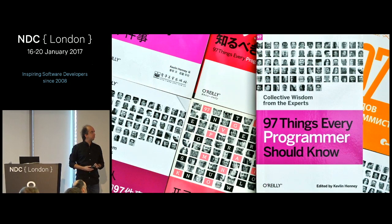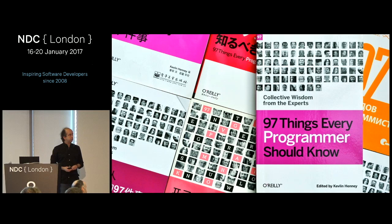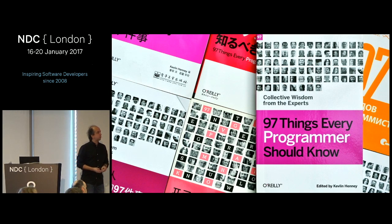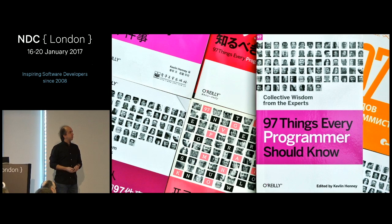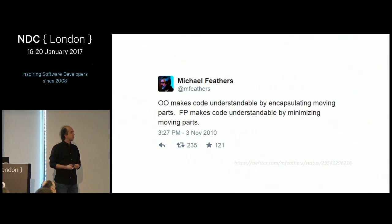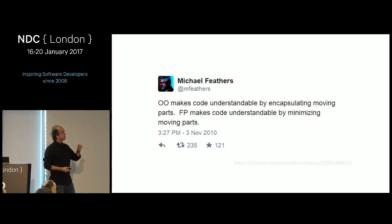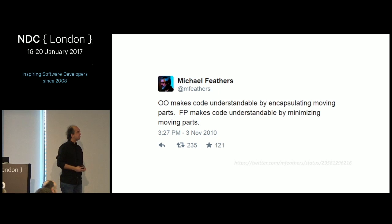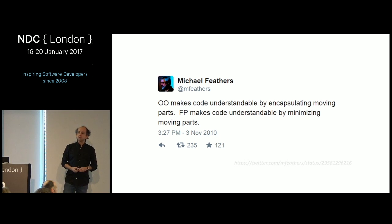I'm also interested in the code level of things. I have a past involved in the C++ standard as well as other languages and industry bodies. I'm going to start with a very simple perspective from Michael Feathers. There are lots of different ways of characterizing paradigms; we'll pick on object orientation and functional. Michael Feathers fits it conveniently into a tweet: object orientation makes code understandable by encapsulating moving parts; functional programming makes code understandable by minimizing moving parts.